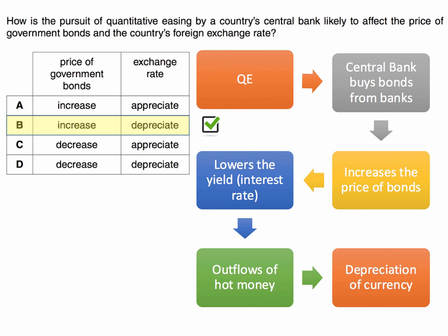When interest rates go down, this typically leads to a fall in the rate of interest in savings accounts and could lead to an outflow of hot money from the economy. As hot money leaves an economy, there's an increased supply of that country's currency across the foreign exchanges, and the currency will tend to depreciate. So one of the channels through which quantitative easing works is through a fall in interest rates causing a depreciation of the currency.